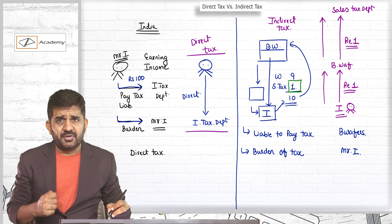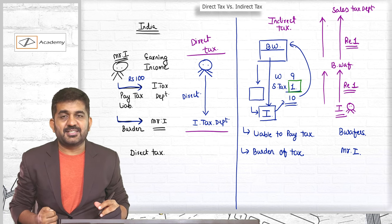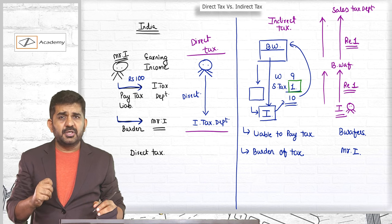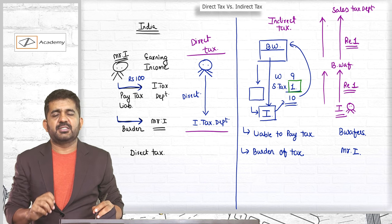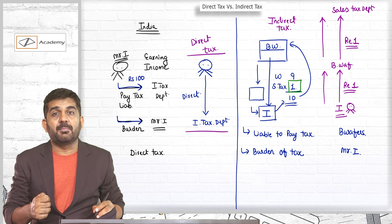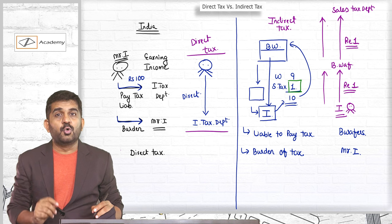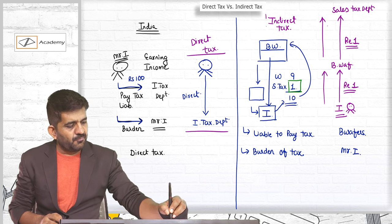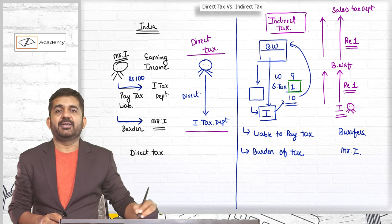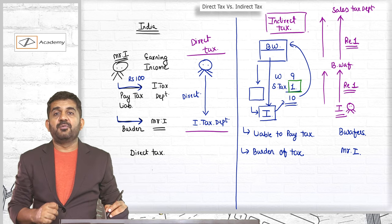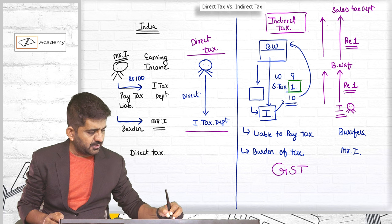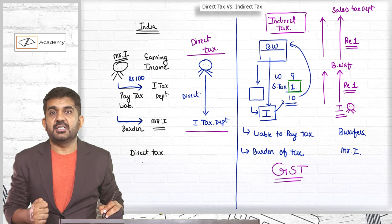Right now in India, we are not liable to pay sales tax. Instead of sales tax and service tax, it is replaced. Sales tax and service tax is replaced by GST, that is Goods and Service Tax, which is one type of indirect tax. And we will be starting the concept of Goods and Service Tax, which is nothing but GST.